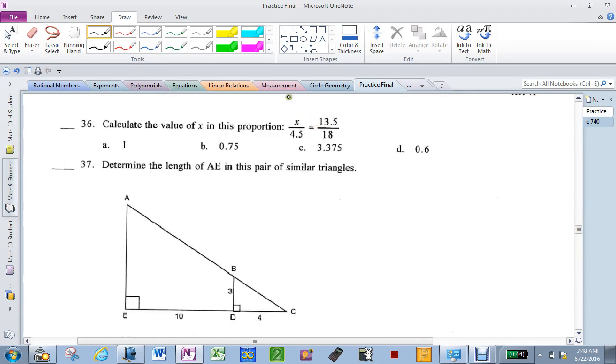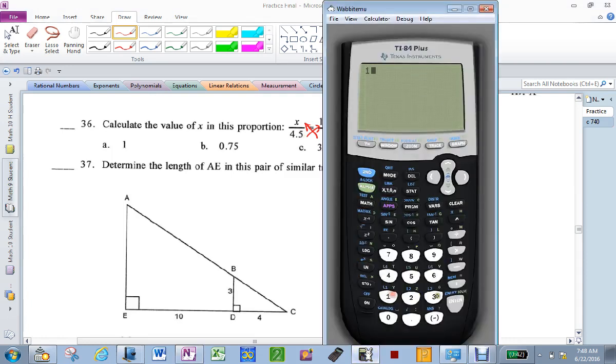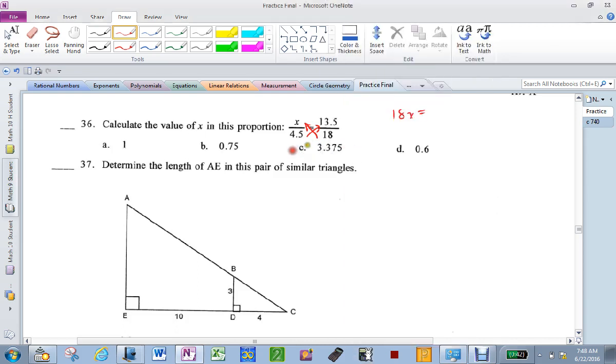As soon as you see this, what do you know you have to do? Cross multiply. Multiply the pair, divide the spare. 18x equals 13.5 times 4.5. So I get my calculator. 13.5 times 4.5, then I divide by 18. And I get 3.375. Right there.